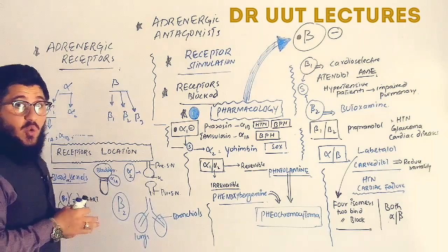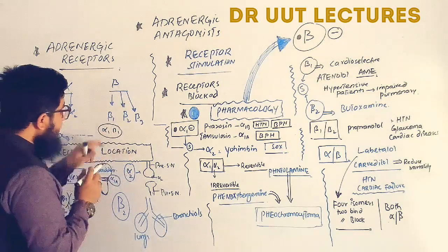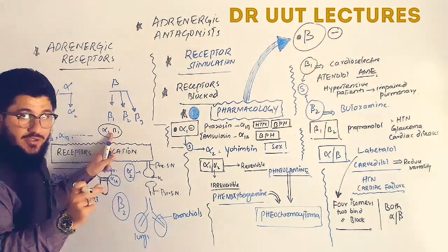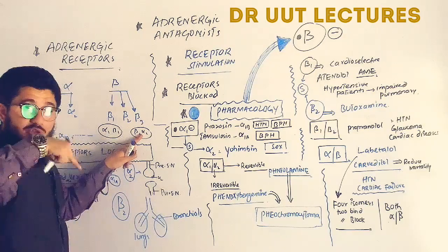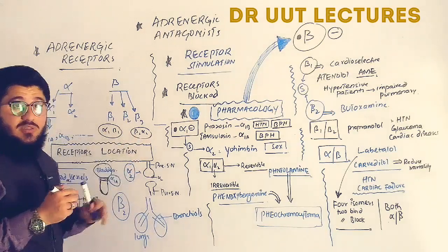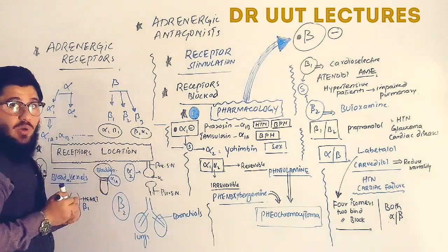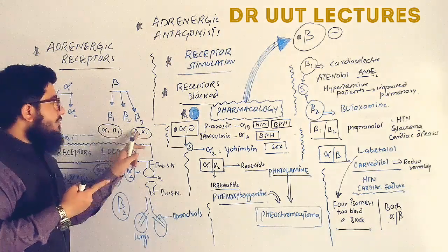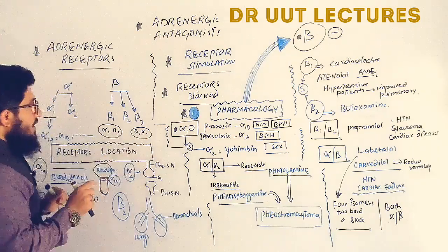A key concept to understand is that stimulating alpha-1 and beta-1 receptors gives a stimulatory action to the organ, causing contraction. If we stimulate beta-2 and alpha-2 receptors, they give an inhibitory signal to the organ, causing relaxation. So remember: alpha-1 and beta-1 stimulation leads to contraction, while beta-2 and alpha-2 stimulation leads to relaxation.